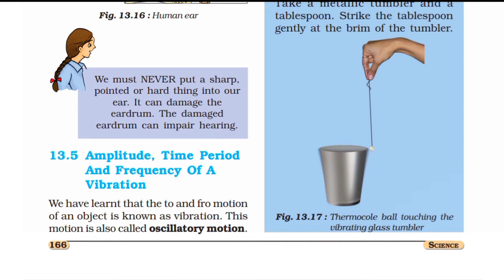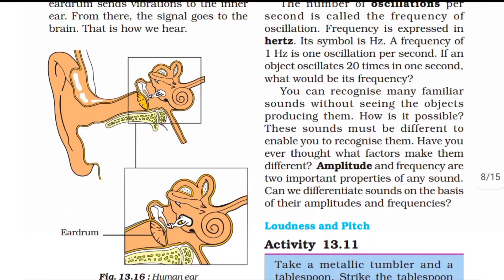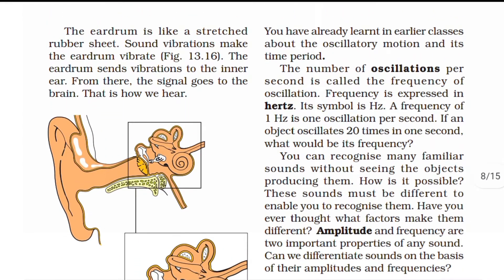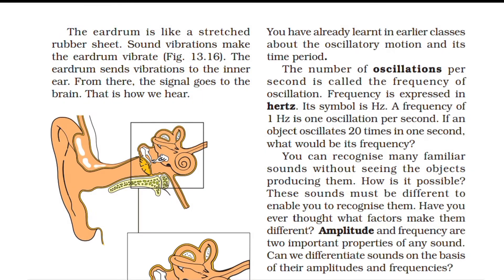This motion is also called oscillatory motion. Take the example of a pendulum — it moves from its mean position to the left, then back, then to the right, and back again. You have already learnt about oscillatory motion and its time period in earlier classes. The number of oscillations per second is called the frequency.